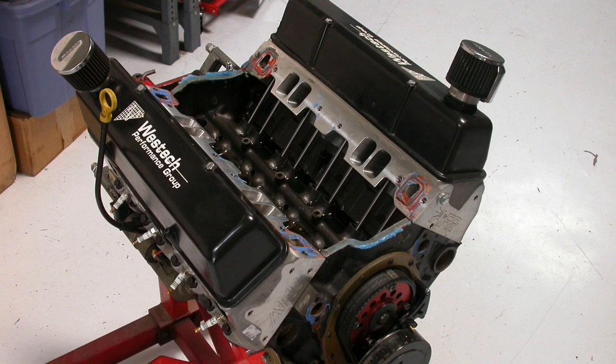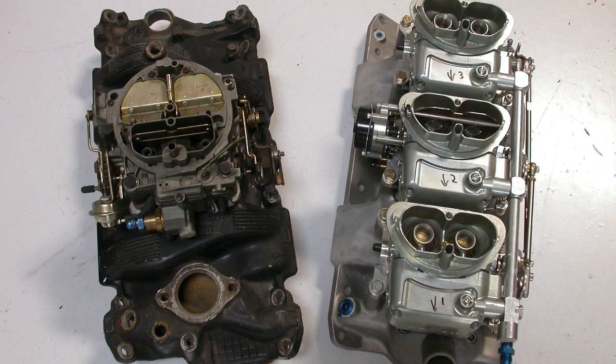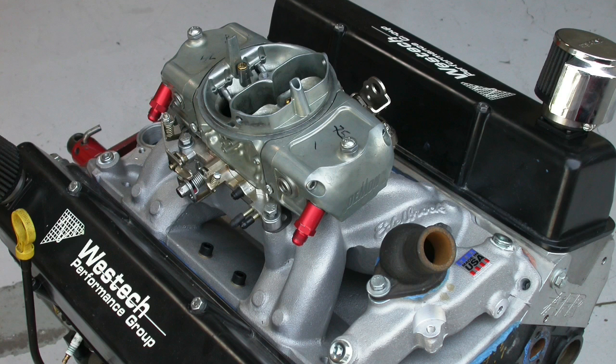What we did was take a typical performance 350. In this case it was the original Gladiator motor owned by Westech, and we ran a back-to-back test comparing a typical dual-plane single four-barrel setup versus this tri-power Barry Grant setup. Now I'm not even sure that this system is even available anymore. This test was run way back in 2002, but I did like this combination because it's a tri-power, it's not a single four-barrel setup.